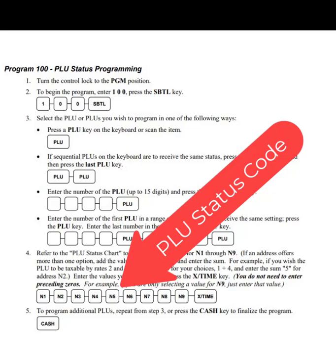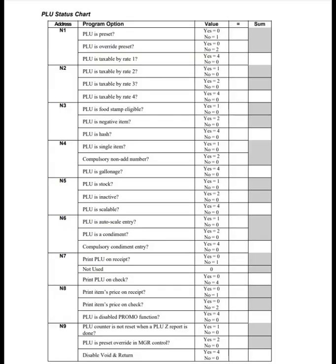A lot of people look at the manual and think, where's the N1 button, where's the N2 button — those buttons don't exist, it's a value that we have to create. You create that value using the flowchart on the next page, which is the PLU status chart. On the left are all of the N1 numbers and on the right is how you compute the number. For N1, we're going to say this PLU is open, so we assign a 1.